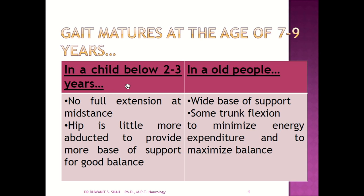Gait actually matures at the age of 7 to 9 years in children. If you compare children below 2 to 3 years with older people in terms of gait, in children within 2 to 3 years there is no full extension at mid-stance, and the hip is slightly more abducted to provide a wider base of support for better balance. Even in older people, we find a wide base of support. Trunk flexion is also compensated to minimize energy expenditure and maximize balance.